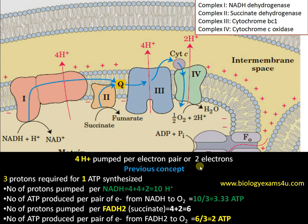4 H+ are pumped per electron pair. 2 electrons from NADH enter Complex 1 and pump 4 protons into the intermembrane space. 3 protons are required for 1 ATP synthesis — 3 protons must pass through ATP synthase. The total protons pumped per NADH are: 4 H+ in Complex 1, 4 H+ in Complex 3, and 2 H+ in Complex 4 — giving a total of 10 H+. Therefore, ATP produced per pair of electrons from NADH to oxygen is 10 ÷ 3 = 3.33, taken as 3.